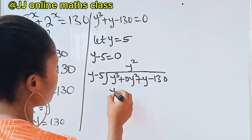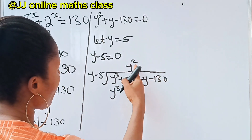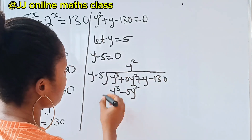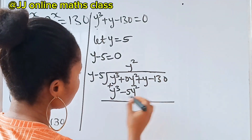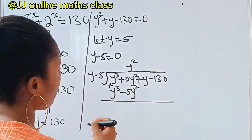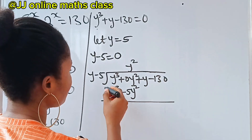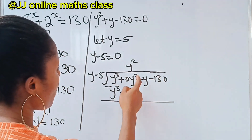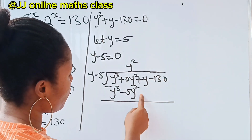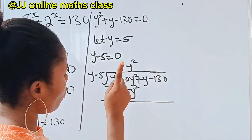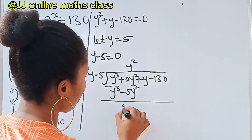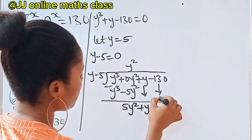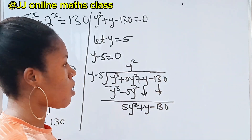y squared times y gives y cubed. y squared times minus 5 gives minus 5y squared. We subtract: y cubed minus y cubed is 0. Then 0y squared minus minus 5y squared gives us 5y squared. We bring down the plus y and minus 130, then divide again.